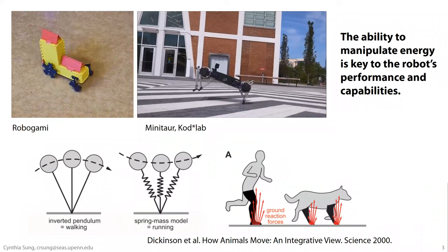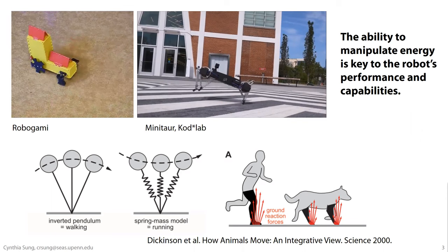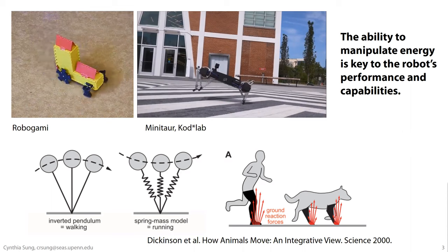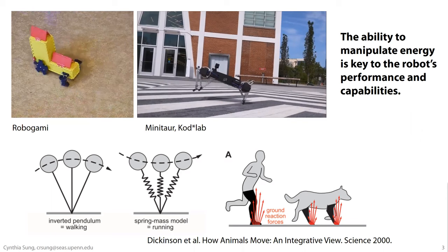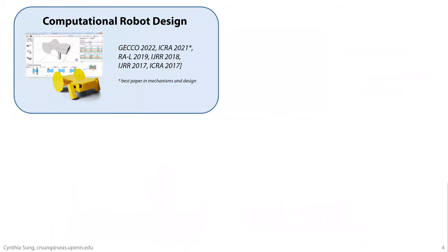The major difference is that the right robot performs energy manipulation. Most of you are probably familiar with the SLIP model, where the robot converts potential to kinetic energy to execute this motion — a model used in robotics and representative of many biological creatures. Since starting at Penn, my group has been interested not only in computational robot design but in how we do this for dynamical robots, and in particular how a robot's compliance affects its ability to manipulate energy.